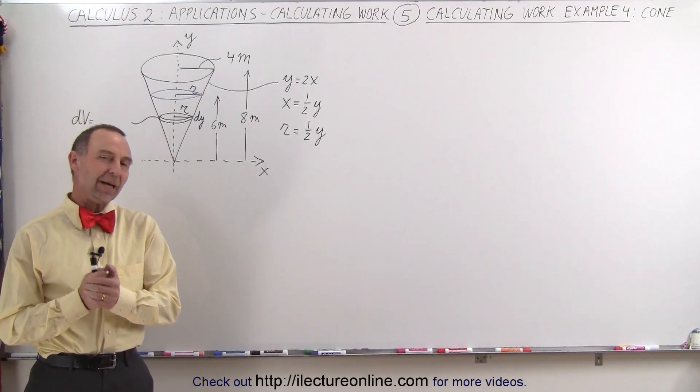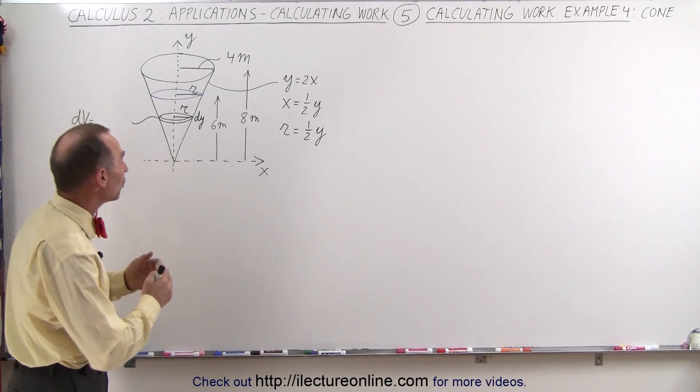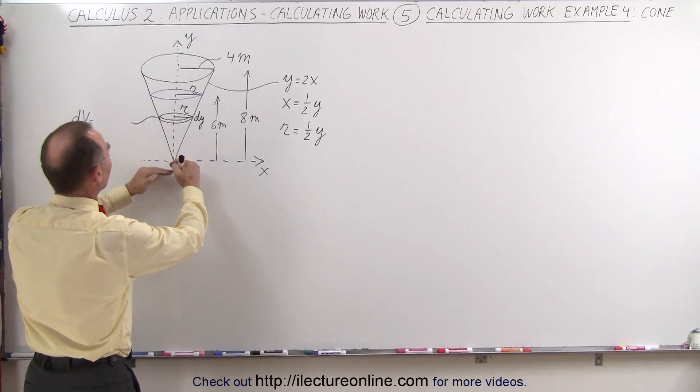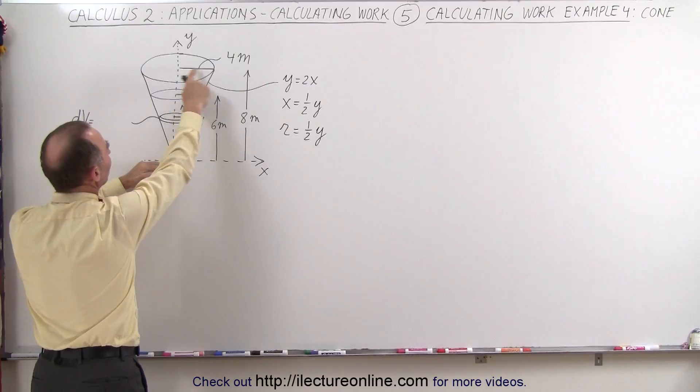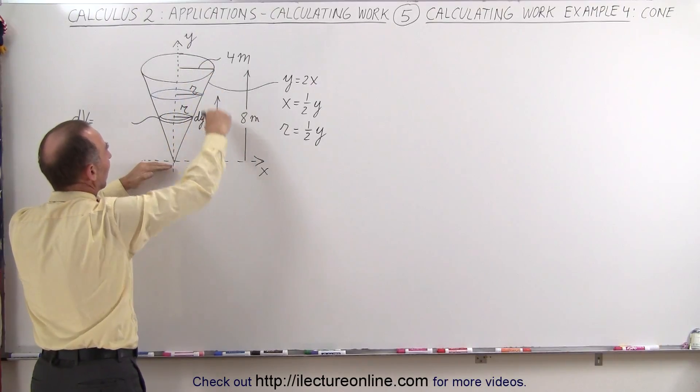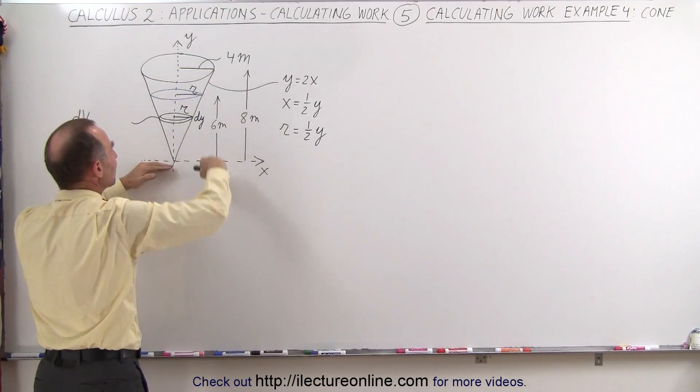Welcome to our lecture online. Here we have an interesting problem. We have an upside down cone that's filled to a height of 6 meters. Notice that the radius of the cone at the top is 4 meters and the height of the total cone is 8 meters.